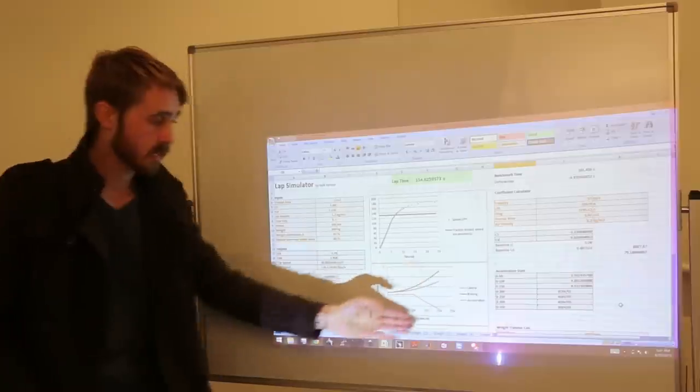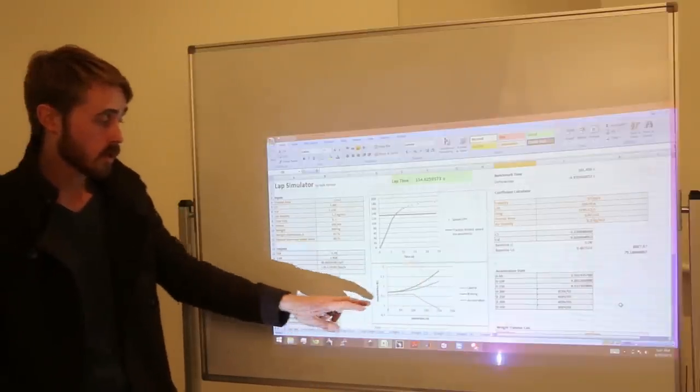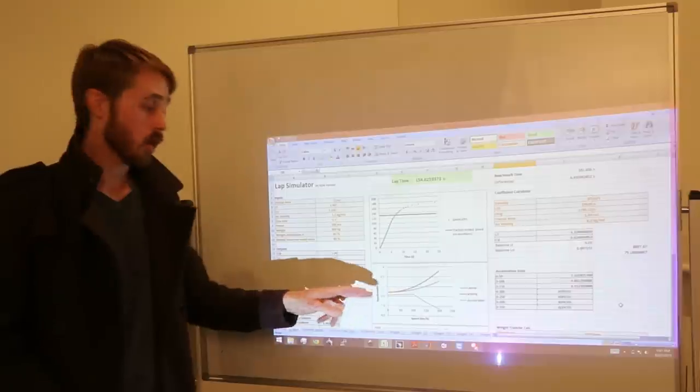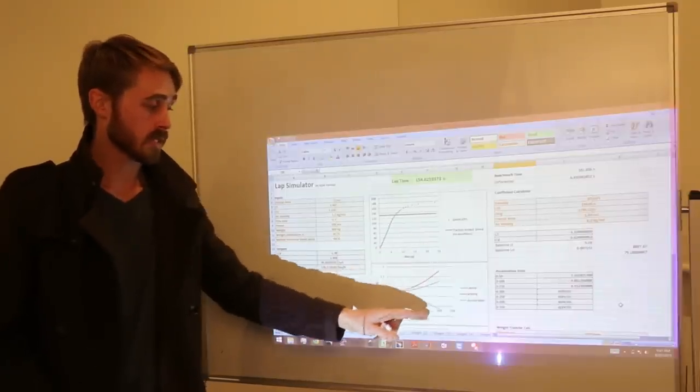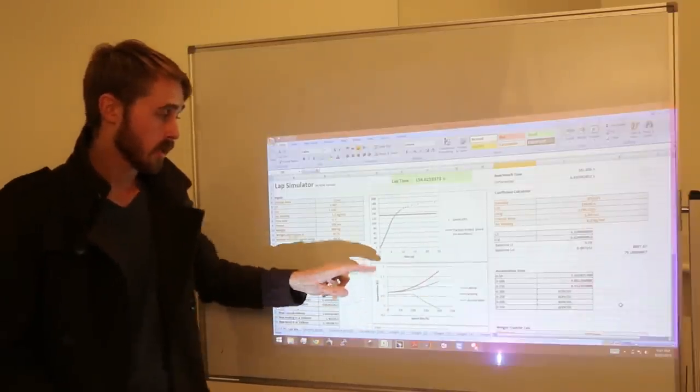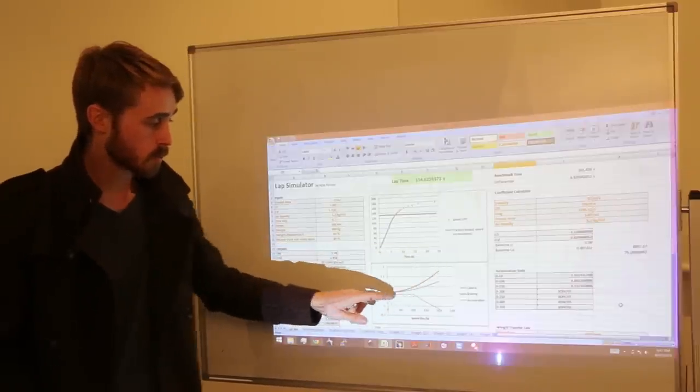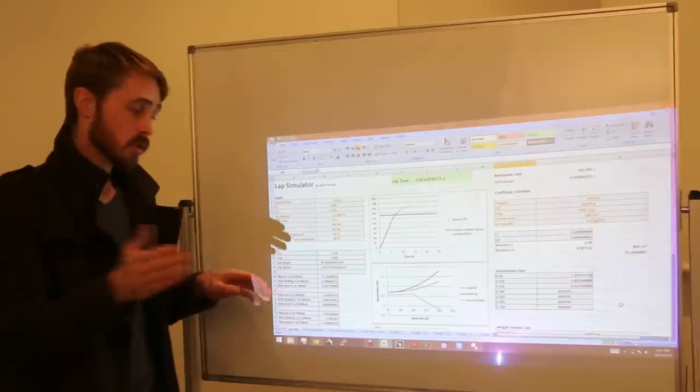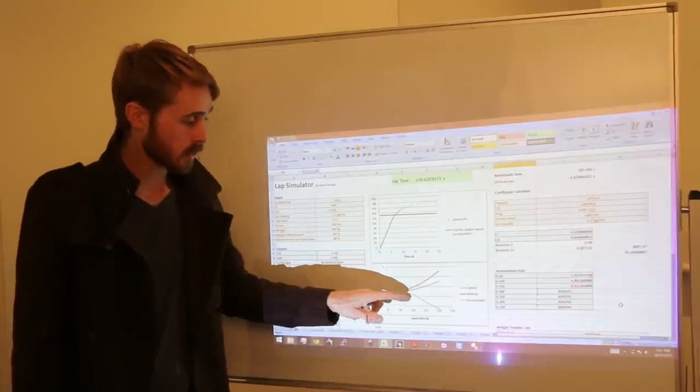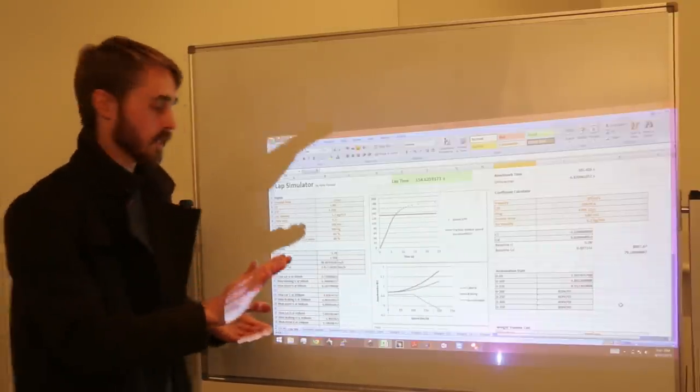Now this chart here is the interesting one from downforce. So what this is is this is an indication of your three main accelerations. So we're looking at the braking acceleration there, the red line, the blue line which is the lateral acceleration or your cornering acceleration, and the green line which is your straight line acceleration.